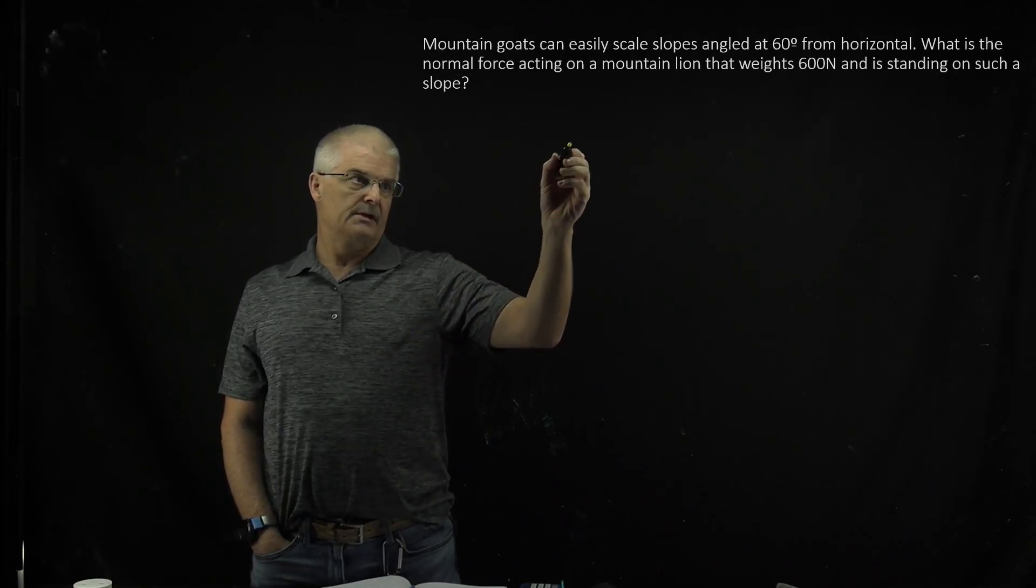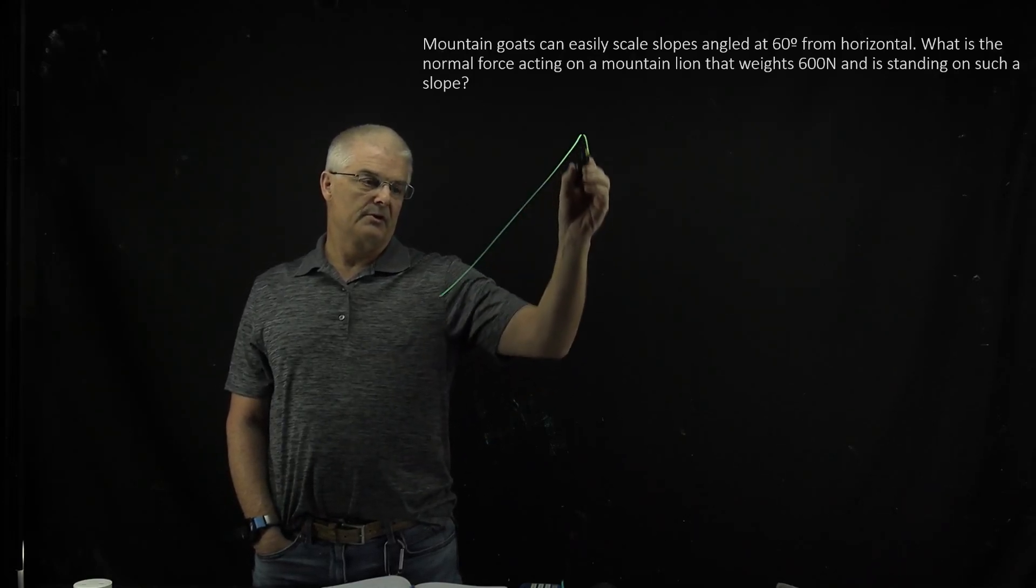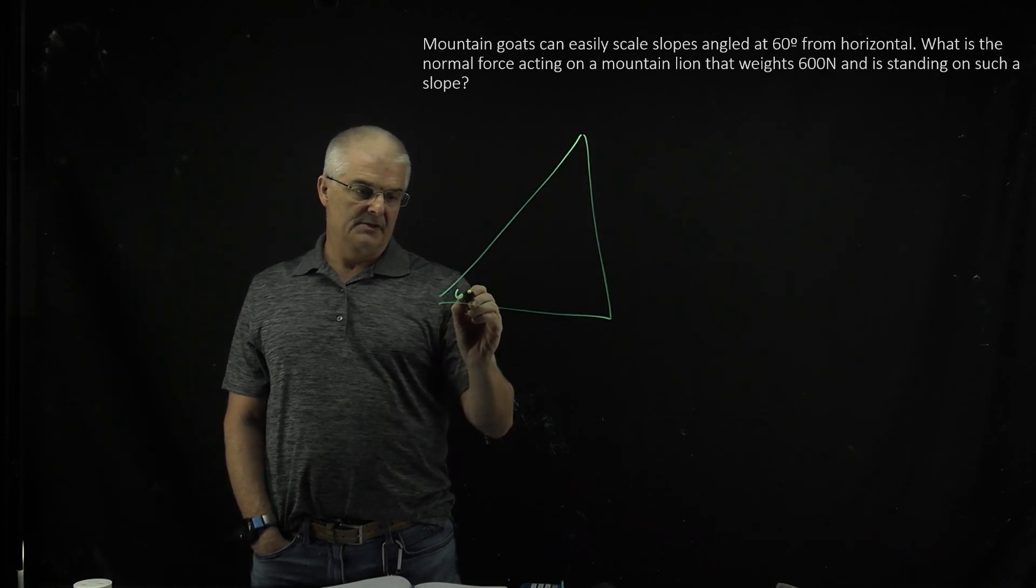So mountain goats can exist at 60 degrees, so I'm going to try and draw a 60 degree angle. This is the mountain, so this is 60 degrees.